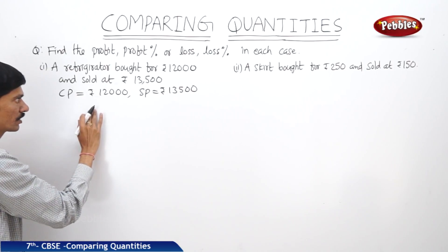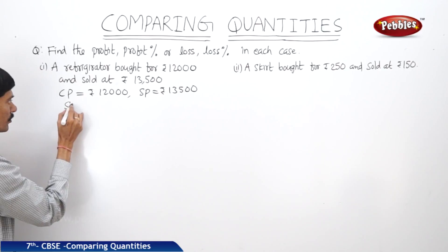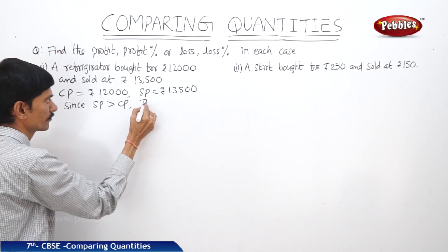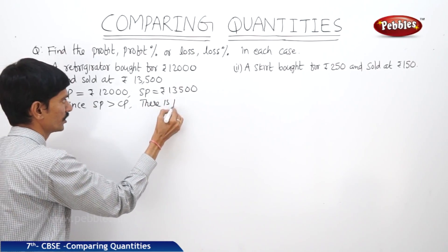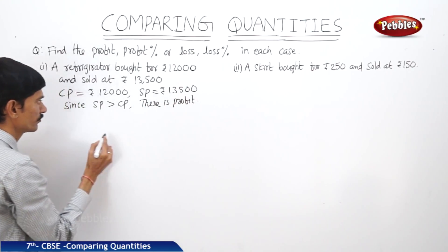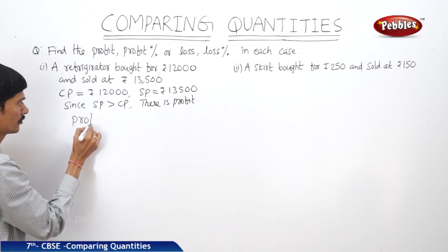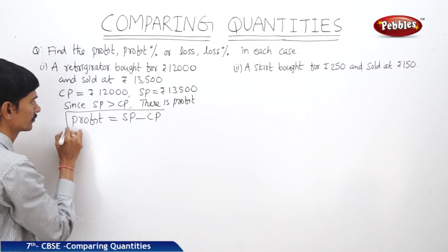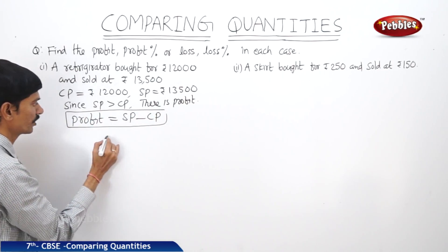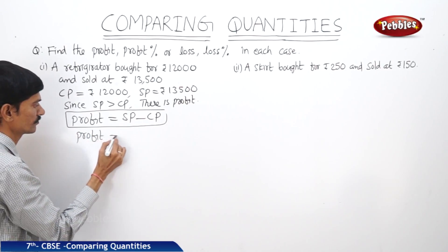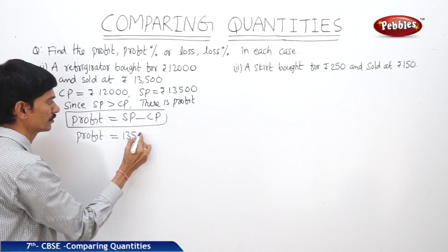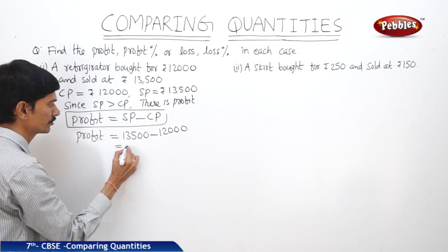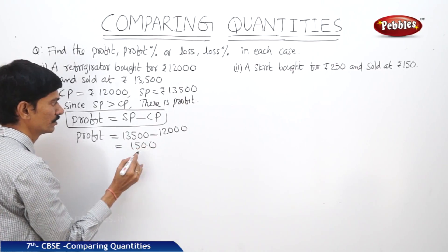Since SP is greater than CP, there is profit. Now we will find the profit. Profit equals selling price minus cost price. So profit equals 13,500 minus 12,000, which equals 1,500 rupees. So that is the profit.